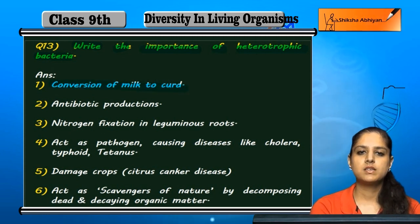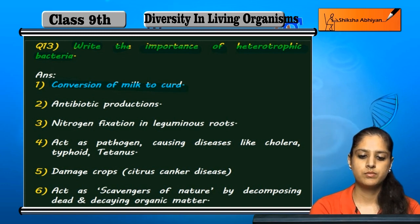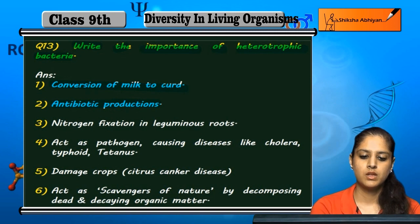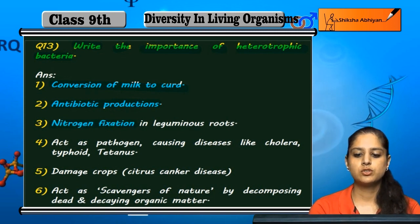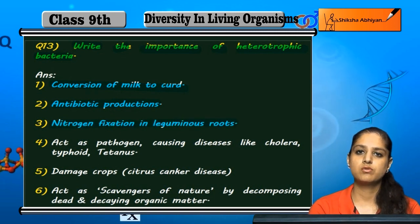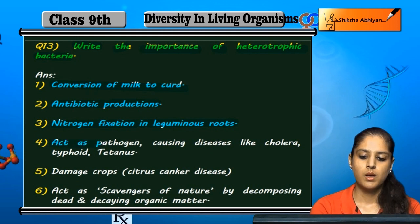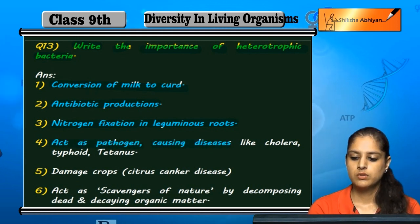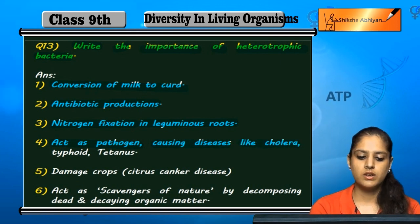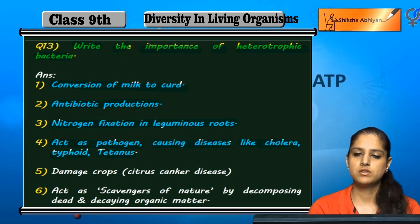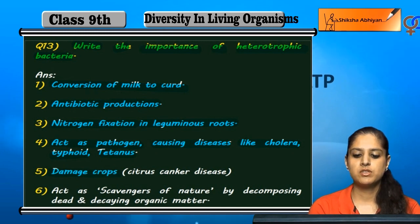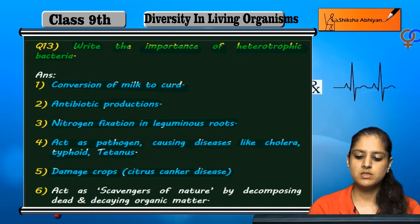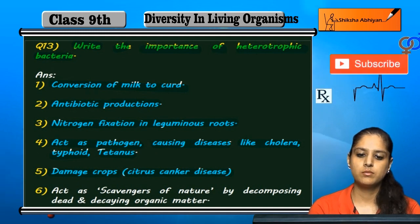it helps to convert milk into curd. It helps to produce antibiotics. Nitrogen fixation, which is in the leguminous roots, which helps the pathogen, which acts in diseases like cholera, tetanus-type diseases, and crop damage at times.